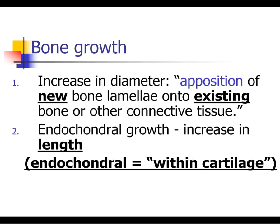Bones get bigger around by making more lamellae — like tree rings. Bones grow longer because of cartilage first — this is why 'endochondral' is used for both bone formation from cartilage and the lengthening of bones.